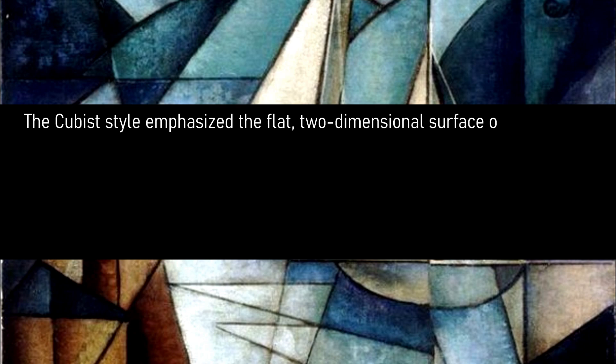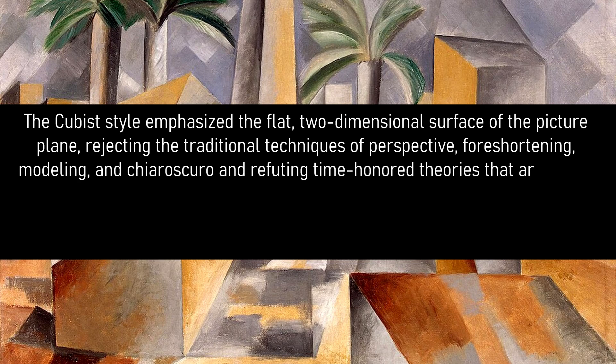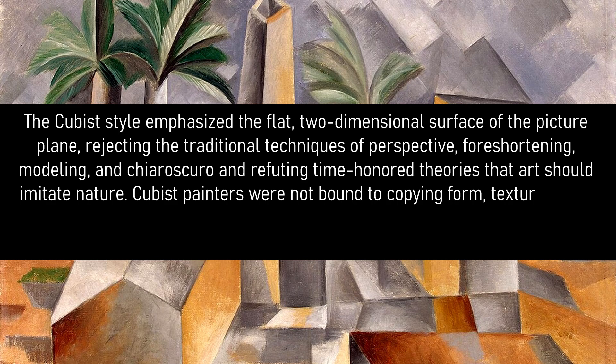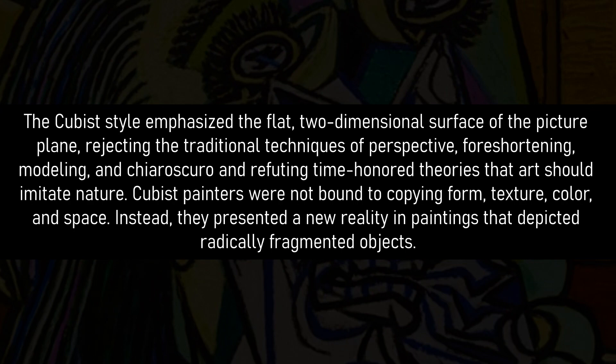The cubist style emphasized a flat, two-dimensional surface of the picture plane, rejecting the traditional techniques of perspective, foreshortening, modeling and chiaroscuro, and refuting time-honored theories that art should imitate nature. Cubist painters were not bound to copying form, texture, color and space. Instead, they presented a new reality in paintings that depicted radically fragmented objects.